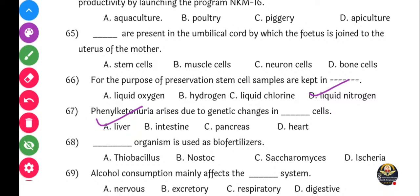Next question: Dash organism is used as bio fertilizer. Options: Thiobacillus, Nostoc, Saccharomyces, or Closteria. Bio fertilizers kone ahe? Option B, Nostoc is the right answer.